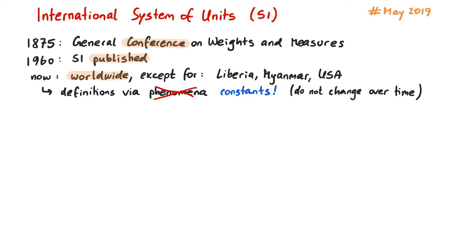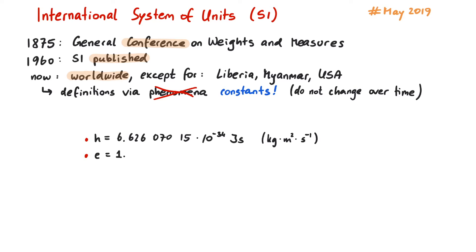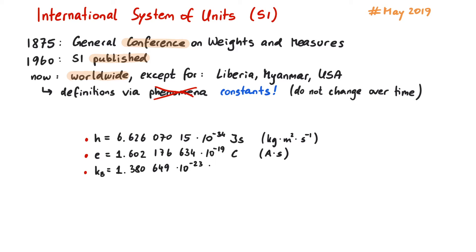So let's talk about the new definitions that are active from May 20th, 2019. Four fundamental constants now have an exact value. First, Planck's constant is exactly 6.62607015 times 10 to the minus 34 joule seconds. Next, the elementary charge is exactly 1.602176634 times 10 to the minus 19 coulombs. Boltzmann's constant is exactly 1.380649 times 10 to the minus 23 joules per kelvin.